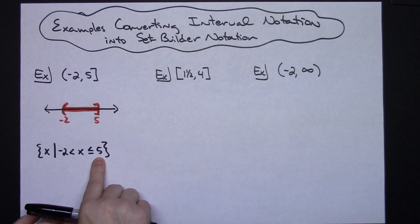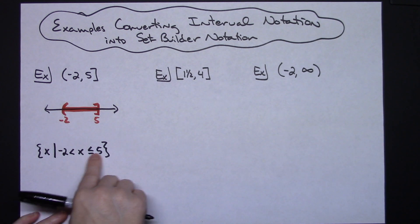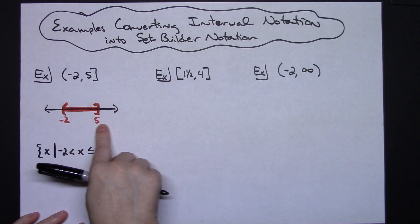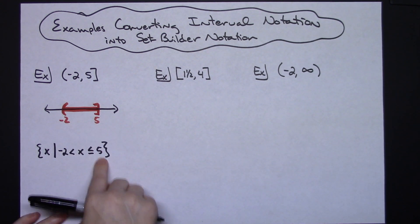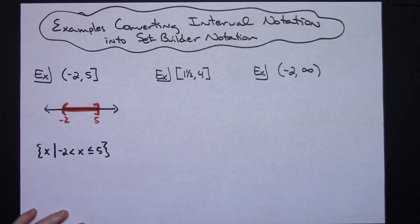In this notation you're always going to use less than or less than or equal to signs, because we want to read left to right with the values of x falling in the middle.